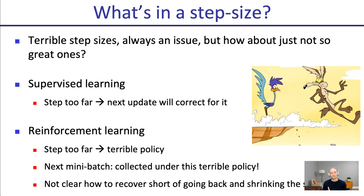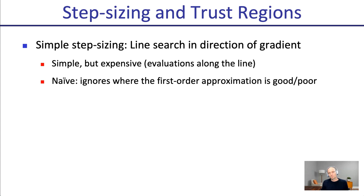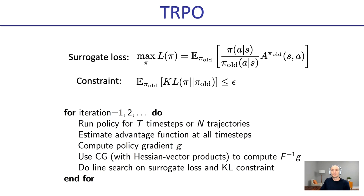It's not clear how to recover from that unless you shrink the step size — but then you spend all this time collecting data on a bad policy, then shrink the step size and try again. A simple approach is a line search in the gradient direction: evaluate a few rollouts at different step sizes, see how well each does, then pick one and do another policy gradient update. It's also a bit naive because it doesn't include additional information about your first-order approximation. But we now have the surrogate loss and other ideas that can help us.